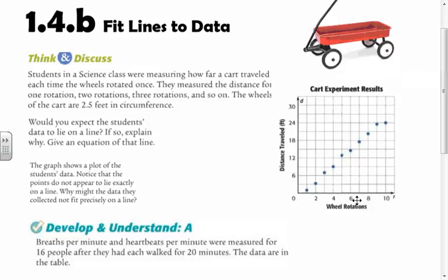It says students in a science class were measuring how far a car traveled each time the wheels rotated once. They measured the distance for one rotation, two rotations, three rotations, and so on. The wheels of the cart are two and a half feet in circumference. Now you would think the data should be linear because if one circumference is two and a half, two circumferences should be five, three should be seven and a half, and so on.